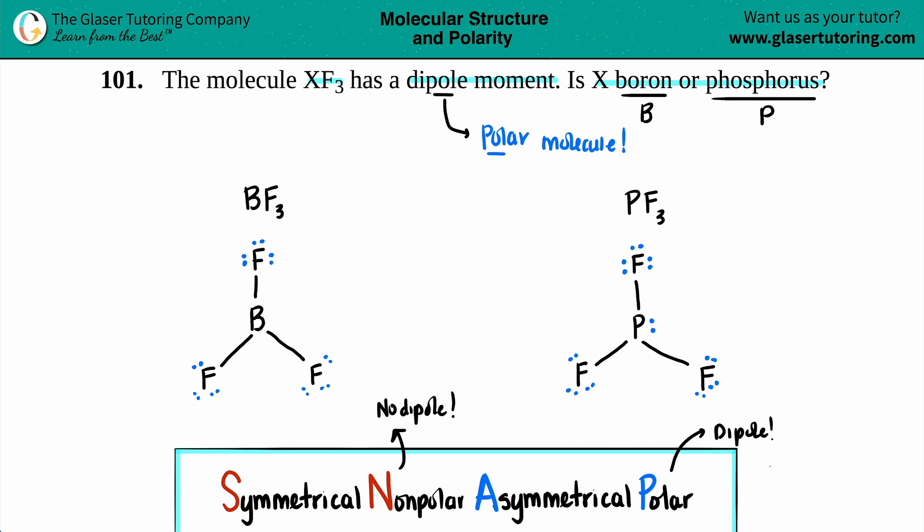So now if I look at boron, I see that I have a central atom. And if I try to draw a line of symmetry, and yes, you can draw a line of symmetry down an element.